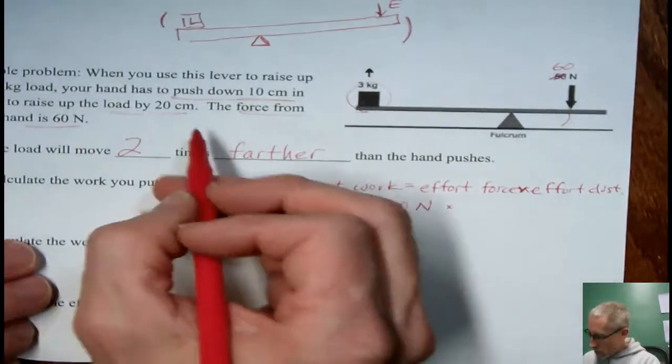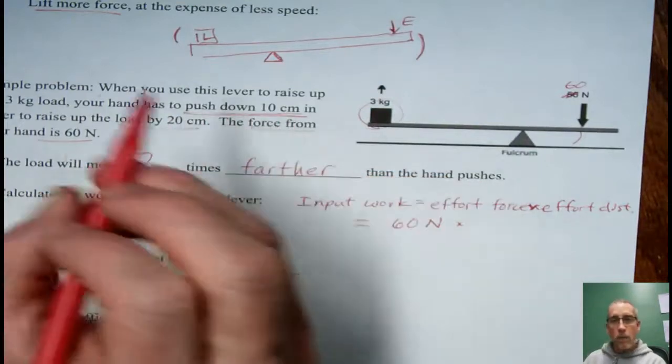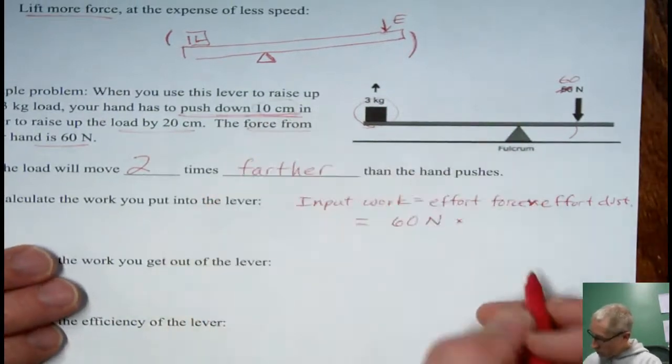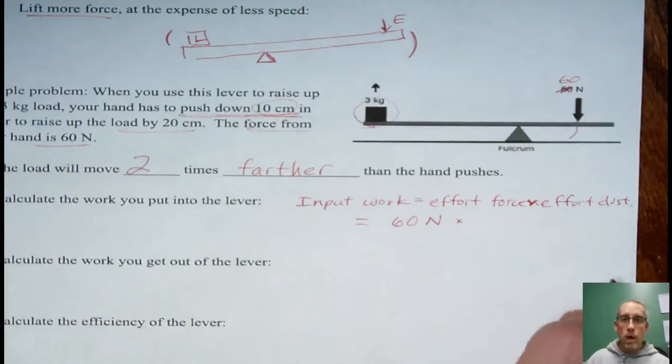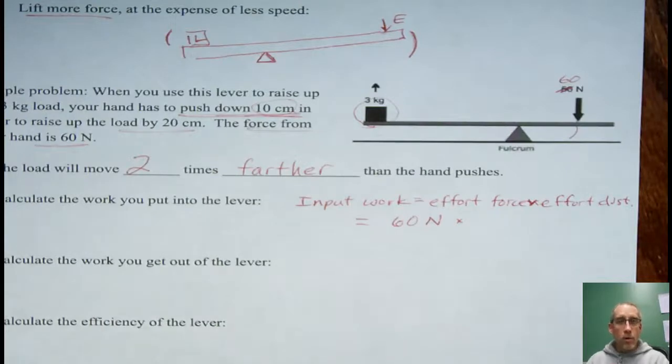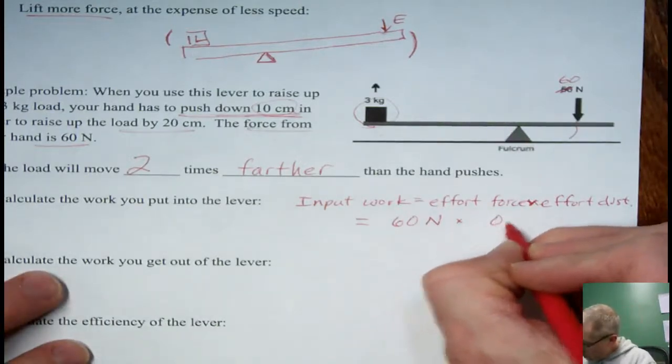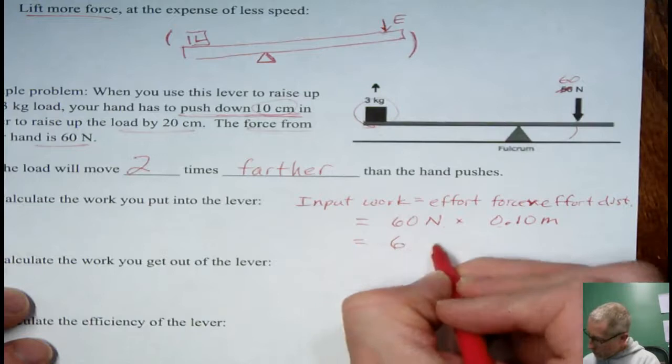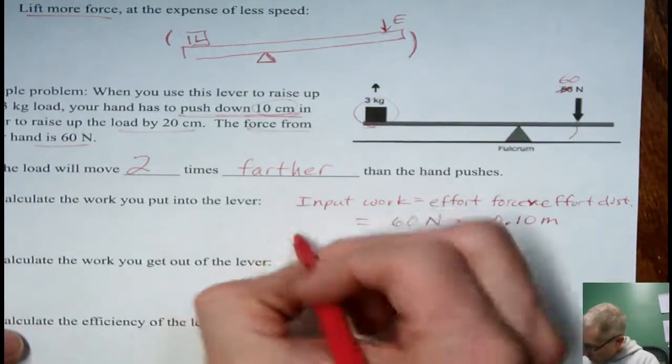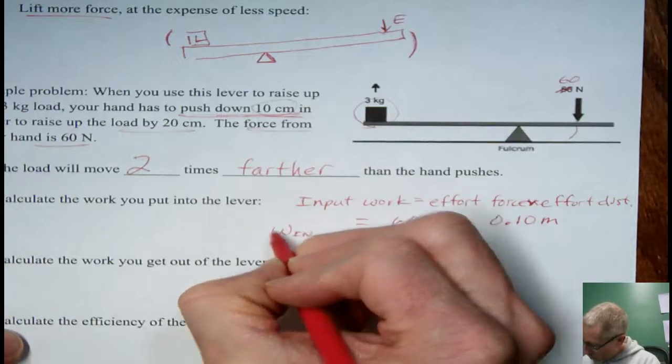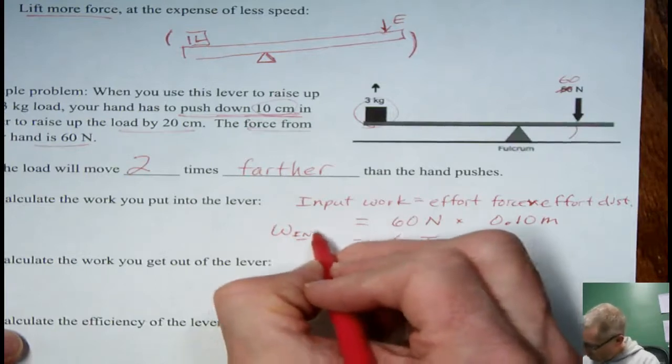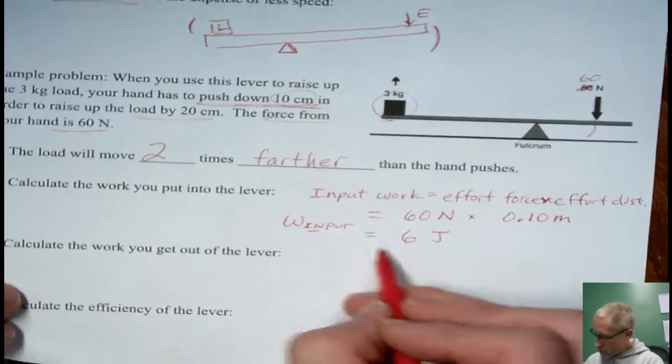The force from the hand that's what we call the effort is 60 newtons. And then the distance is the distance that the hand pushes. Be careful there's going to be two distances given in these problems. Make sure you get the right one. This is only 10 centimeters. Now because I want my work to be measured in joules I don't want to leave it as 10 centimeters. But if you look on a meter stick 10 centimeters is 1 tenth of the whole stick. So that means it's a tenth or 0.1 meters. And when we multiply those together that gives us six joules. So six joules input.